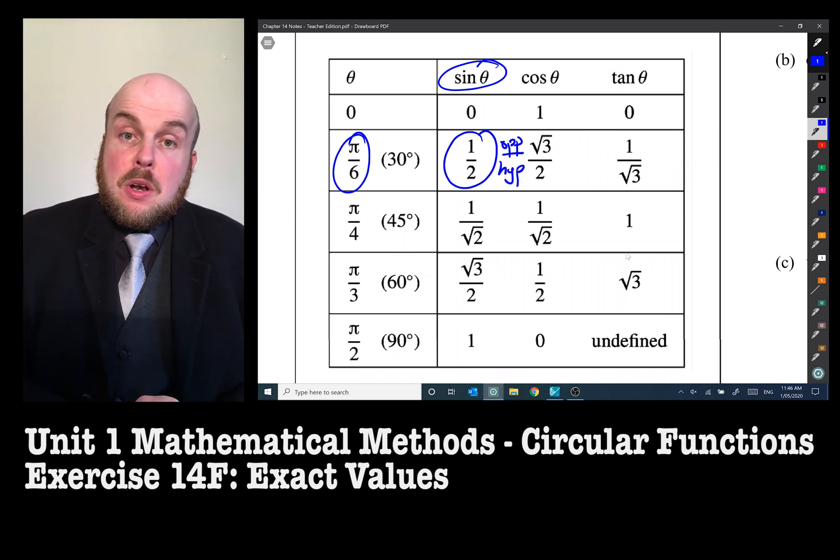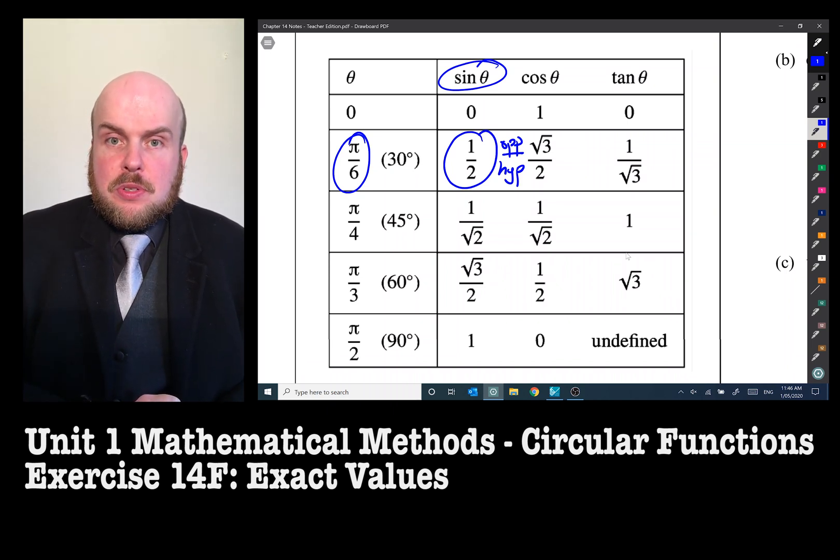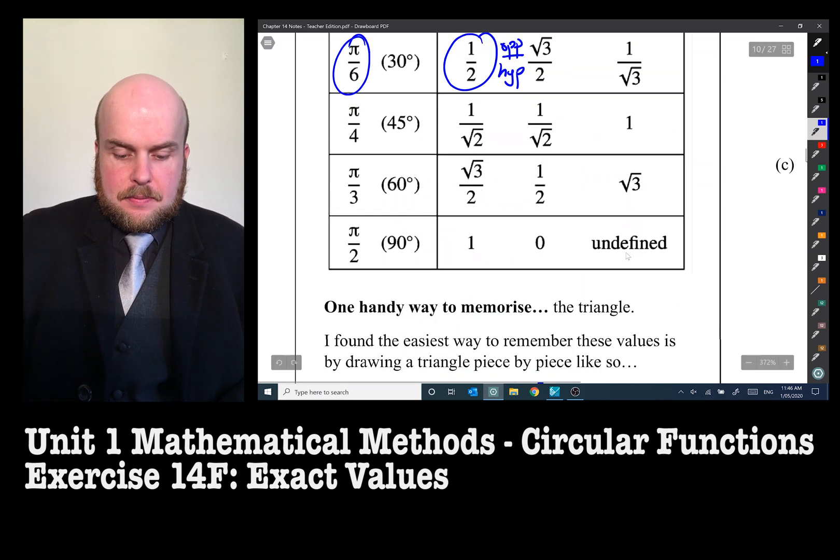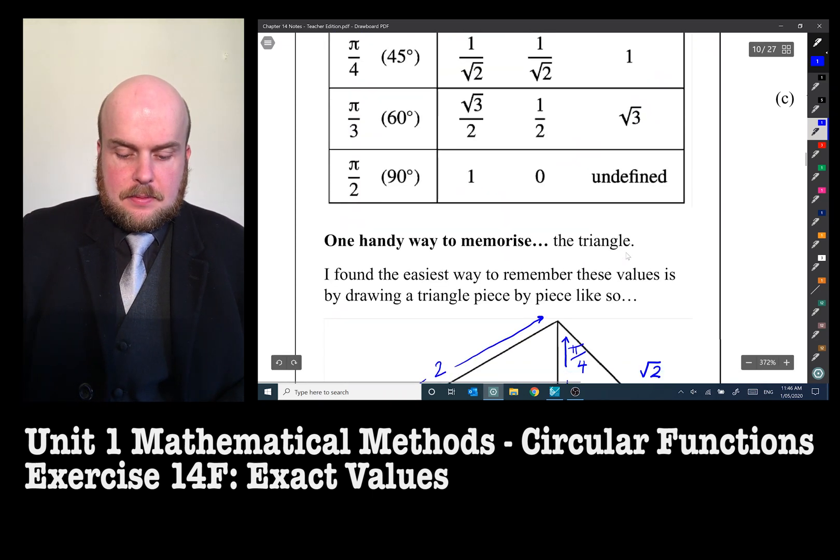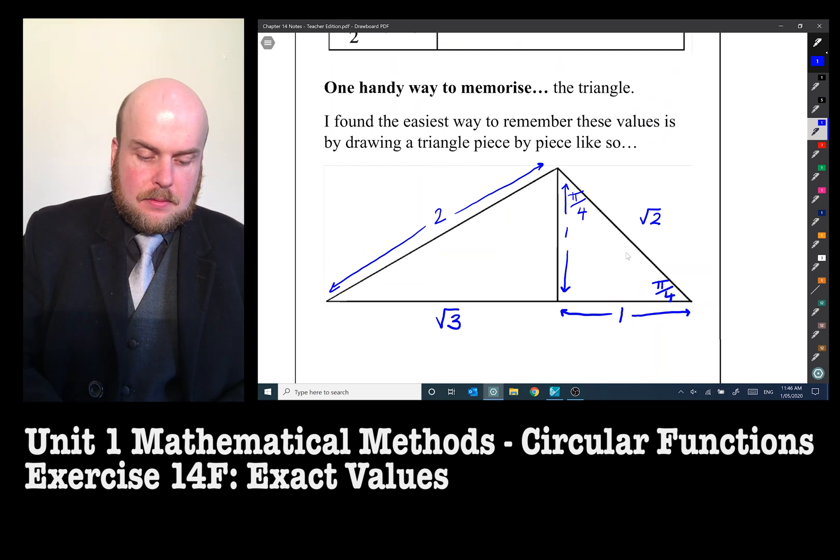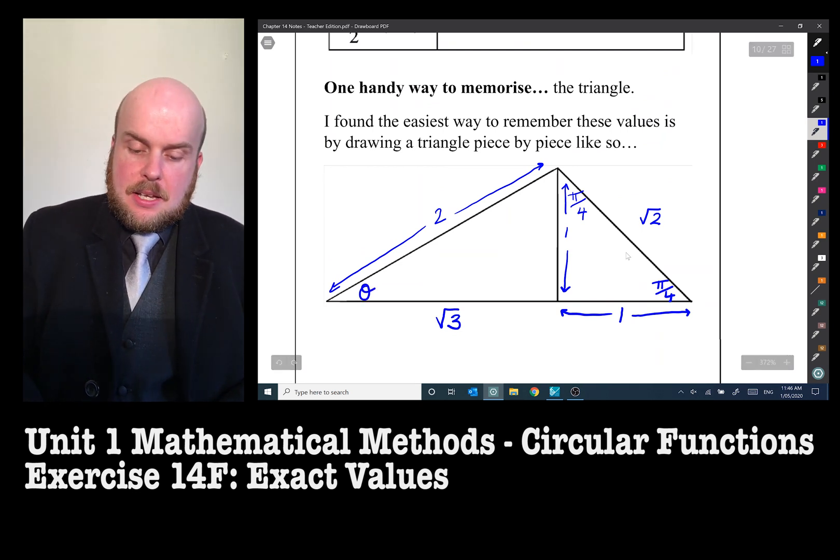Sine is equal to opposite over hypotenuse. So with the one on the left, I need to find out which angle would result in this ratio. I have two choices.